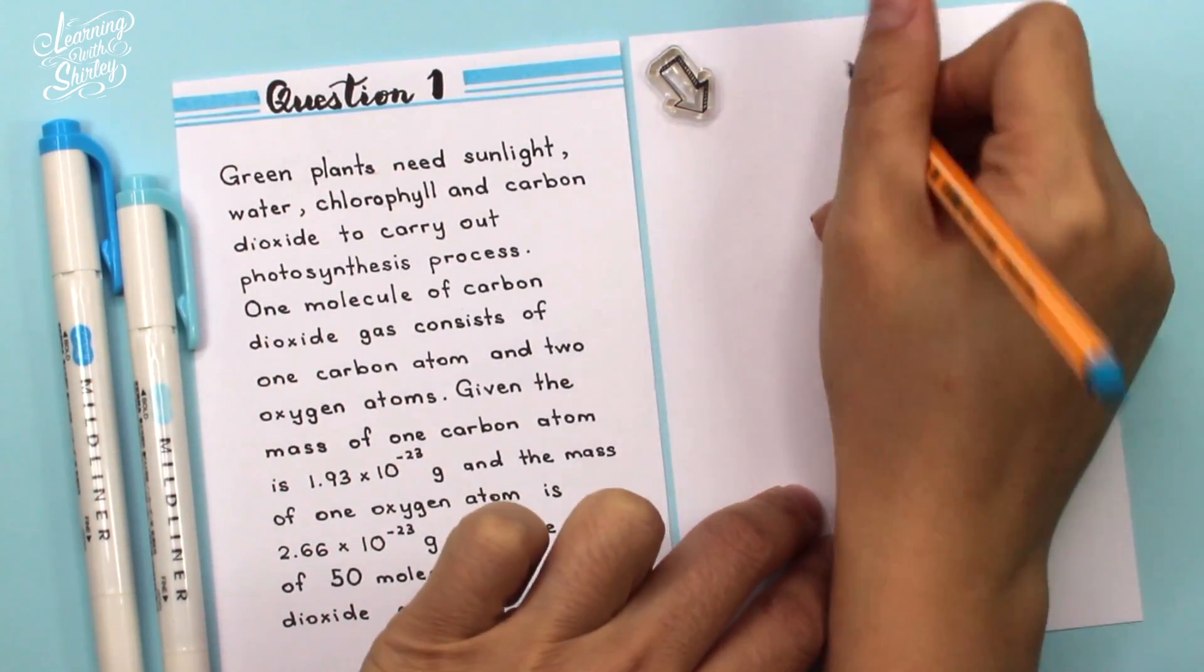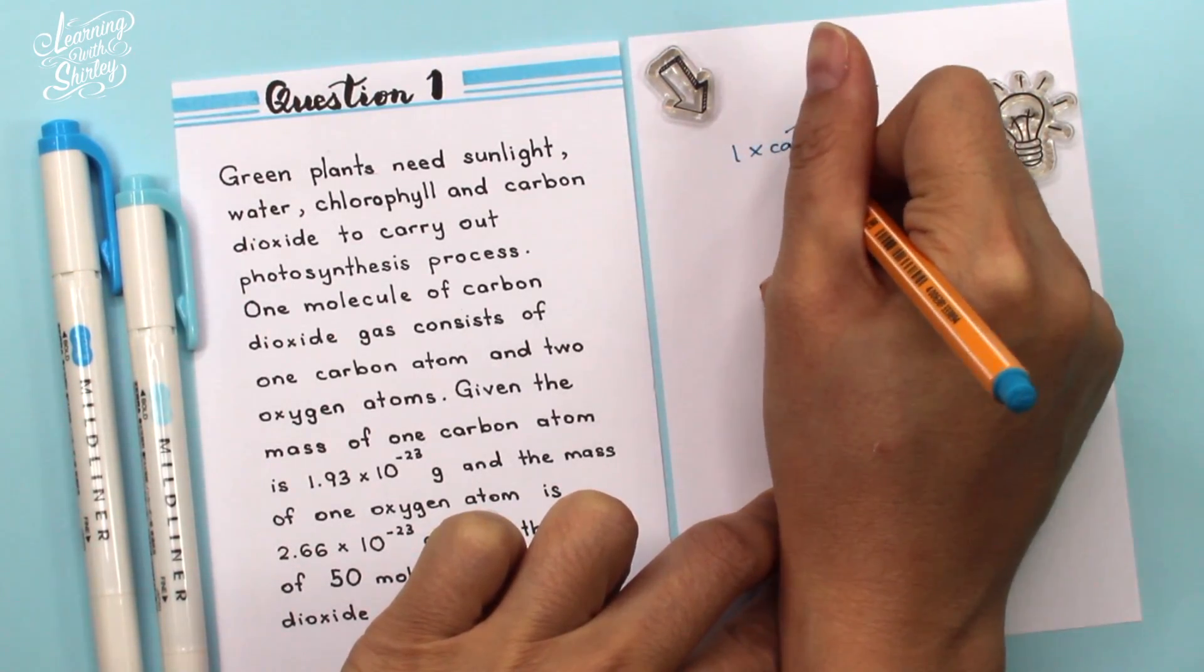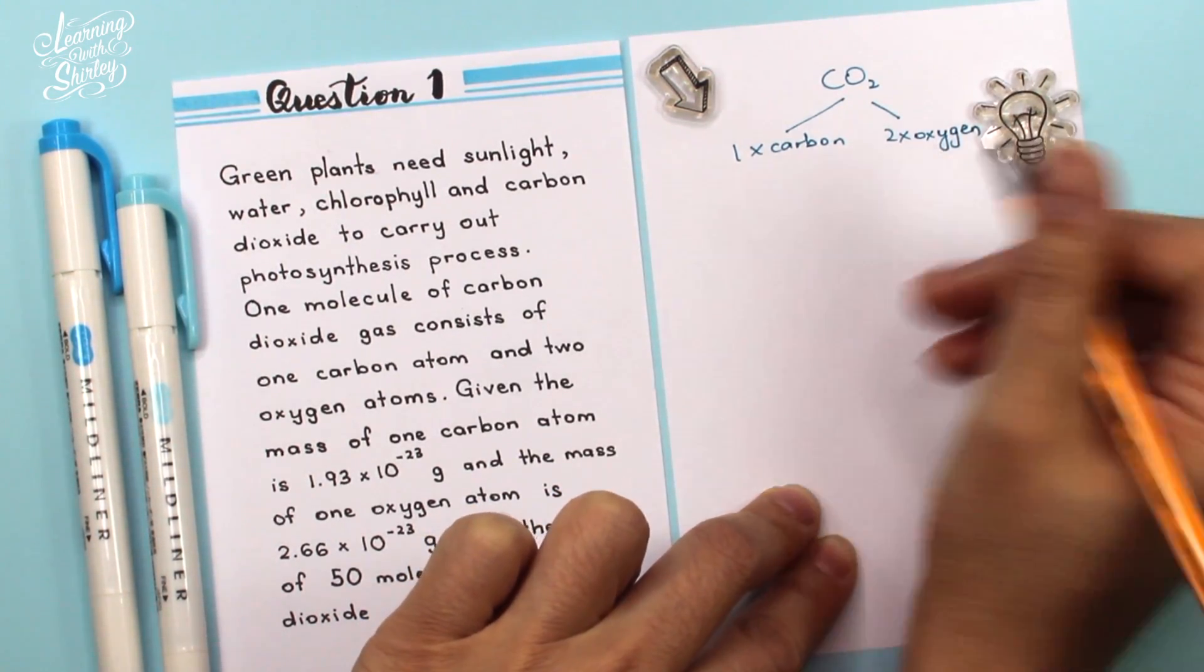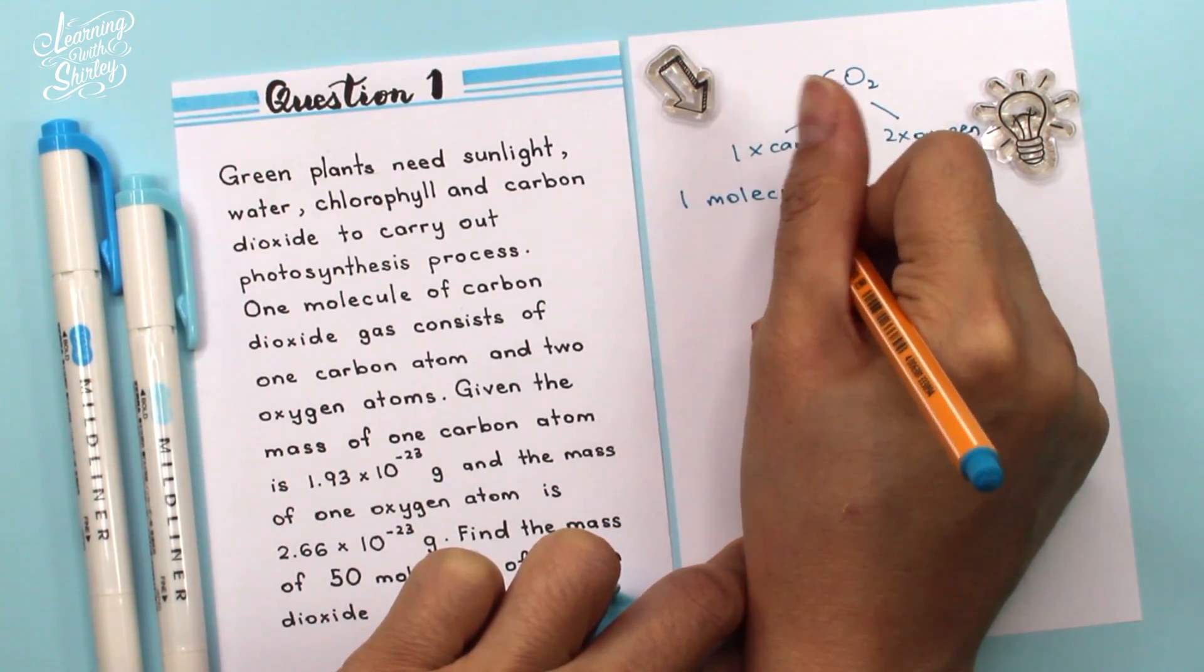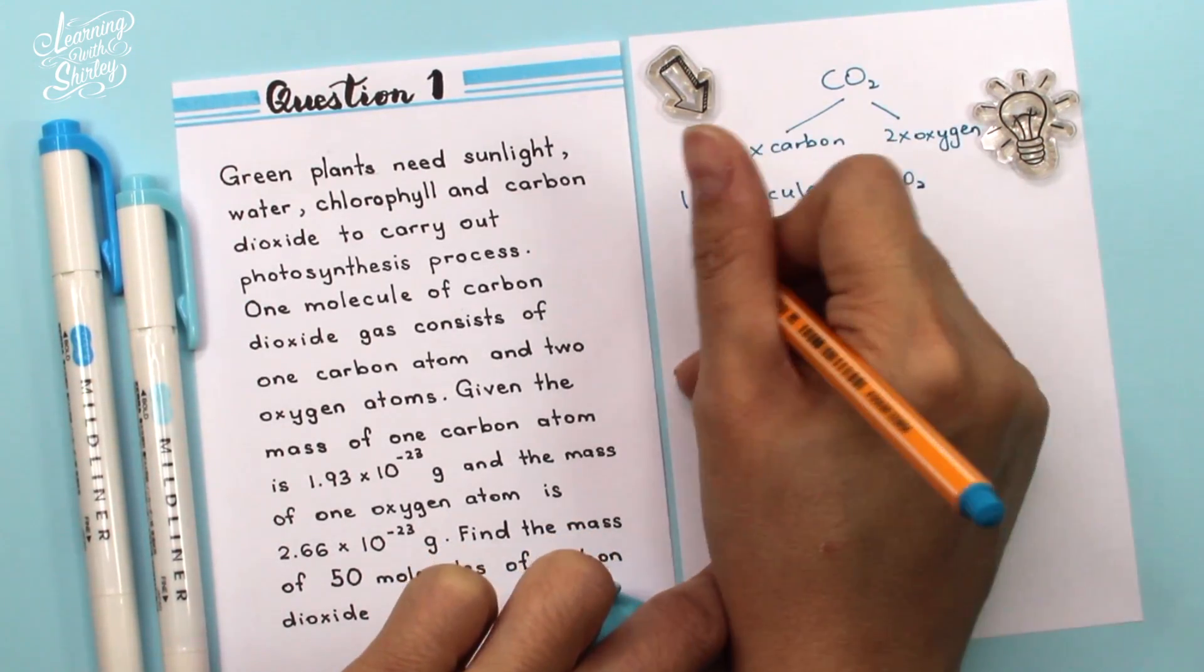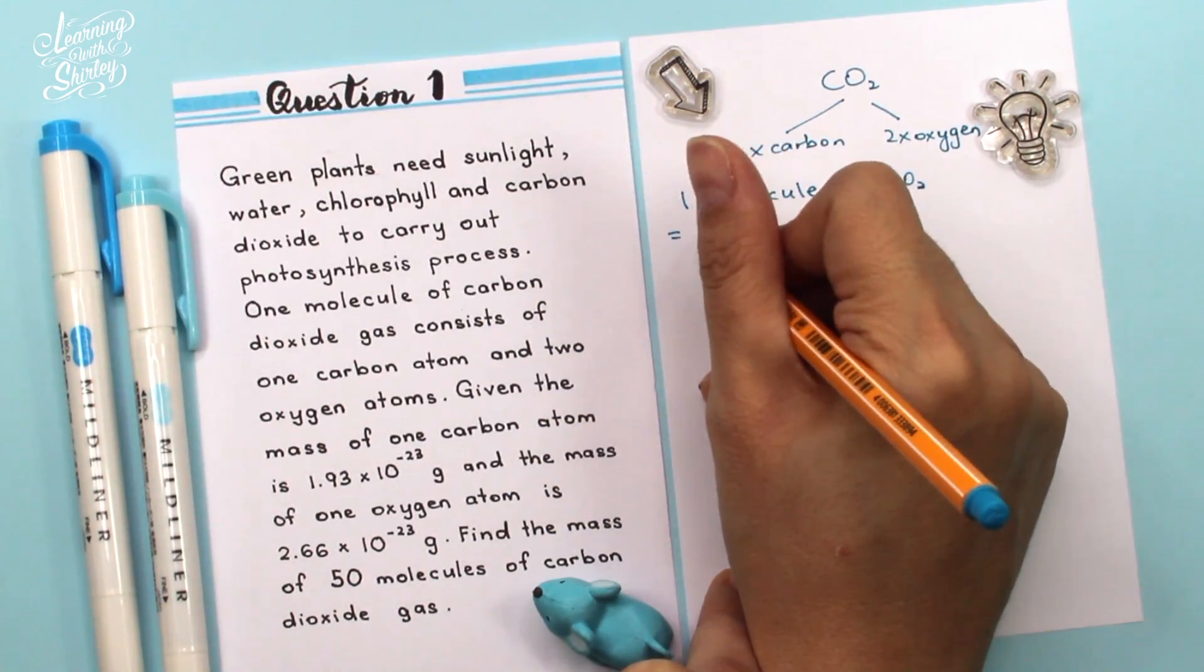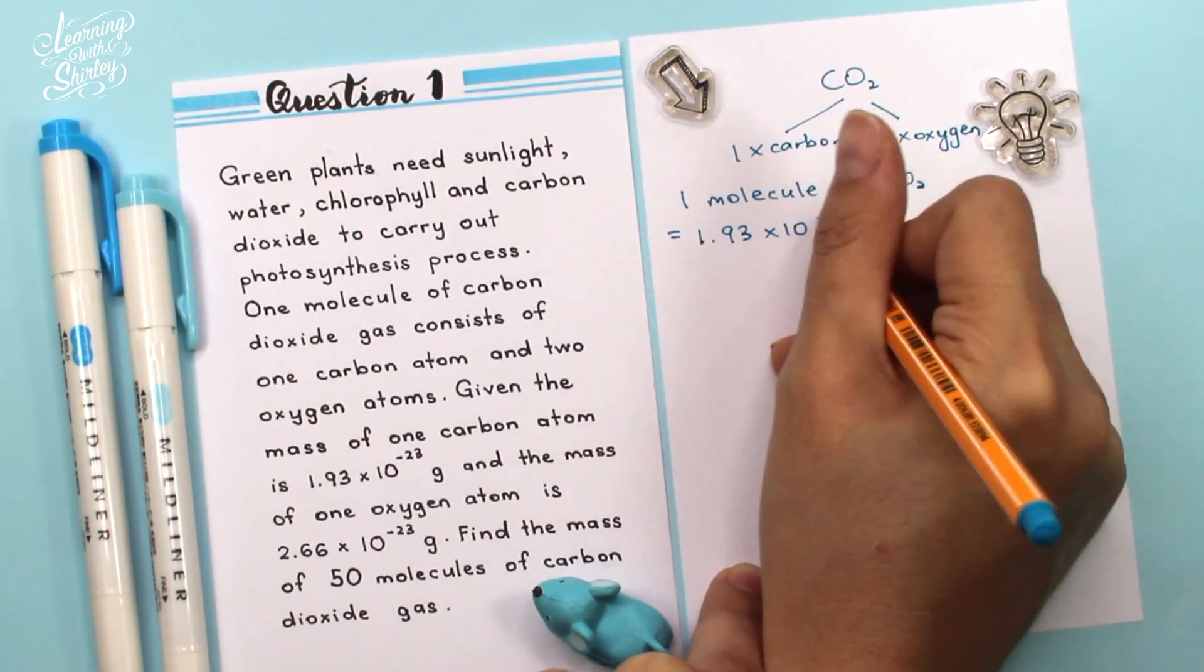One molecule of carbon dioxide consists of one atom of carbon and two atoms of oxygen. So we need to find one molecule of carbon dioxide first. One molecule of CO2 equals mass of one carbon atom is 1.93 times 10 to the power of negative 23.